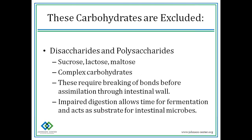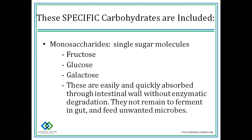The overgrowth of these undesirable microbes creates inflammation and malabsorption in the intestinal system, and this vicious cycle continues without treatment and intervention. So essentially, a specific carbohydrate diet would exclude any disaccharide and any polysaccharide — sucrose, lactose, maltose — anything that requires the breaking of a bond before it can be absorbed through the intestinal wall. Specific carbohydrates that are included are monosaccharides: fructose, galactose, glucose — single sugar molecules that are easily absorbed through the intestinal wall without sitting there and feeding unwanted bacteria.